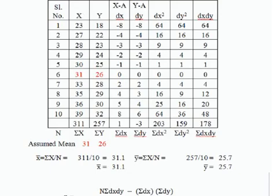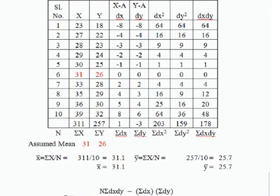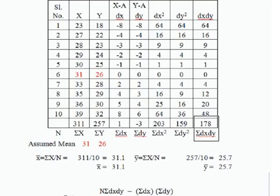Now multiply the corresponding dx and dy values: (−8)×(−8)=64, (−4)×(−4)=16, (−3)×(−3)=9, (−2)×(−2)=4, (−1)×(−1)=1, 0×0=0, 2×2=4, 4×3=12, 5×4=20, and 8×6=48. Adding all dx·dy values gives sigma dx·dy = 178.